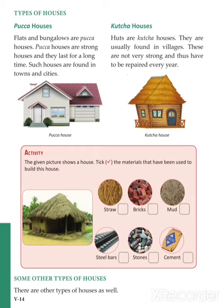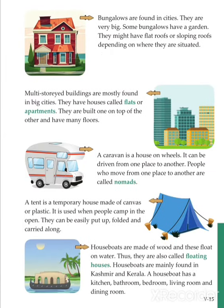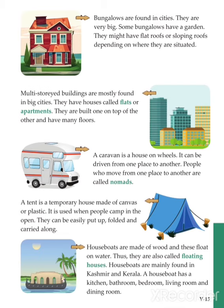Other than this, there are other different types of houses as well. Bungalows are very big houses with flat roofs or sloping roofs, which are called paka houses. Flats are mostly used to fit many families in the same building, because of the shortage of space in cities. So we see flat types of houses only in big cities.